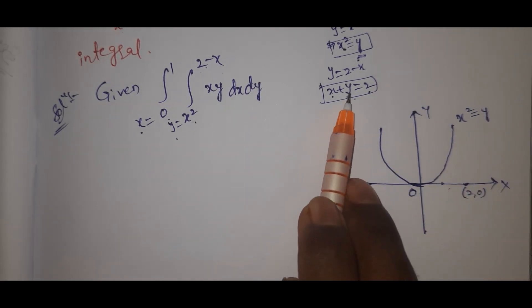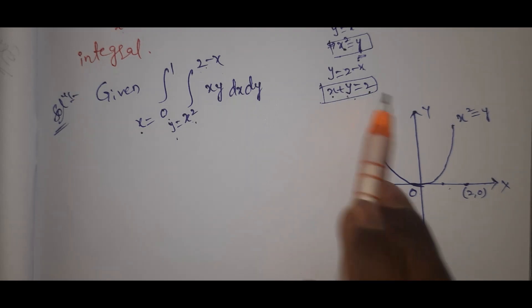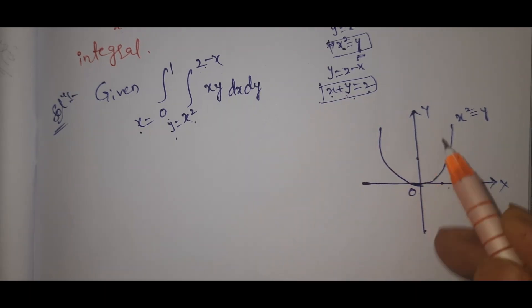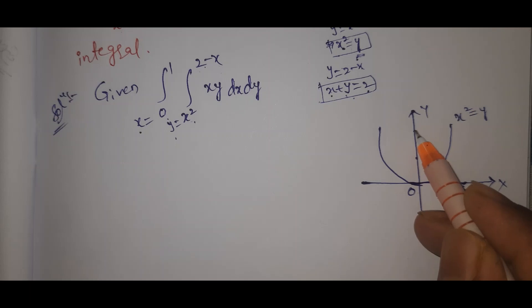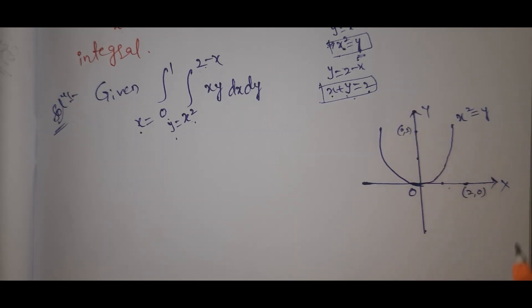On the y-axis, x equals 0, and y equals 2, giving us the point (0, 2).